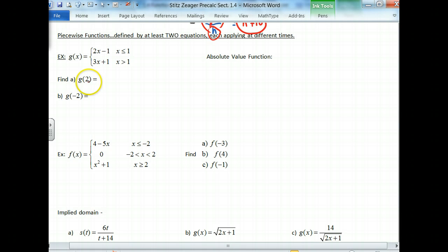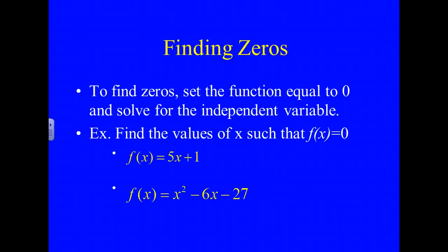Okay, and looking at this, g of 2, where does 2 fall? Is 2 less than 1 or greater than 1? Well, it's going to be greater than 1. So I'm going to apply this function at that time. So it's 3 times 2 plus 1. And then negative 2, where does that fall? Is it less than 1 or greater than 1? I should say less than or equal to. Well, here it is. It falls in this category, so I'm going to go 2 times negative 2 minus 1 is equal to negative 5. Okay, so it depends where the piece falls and then you evaluate it by that. This will tell you.